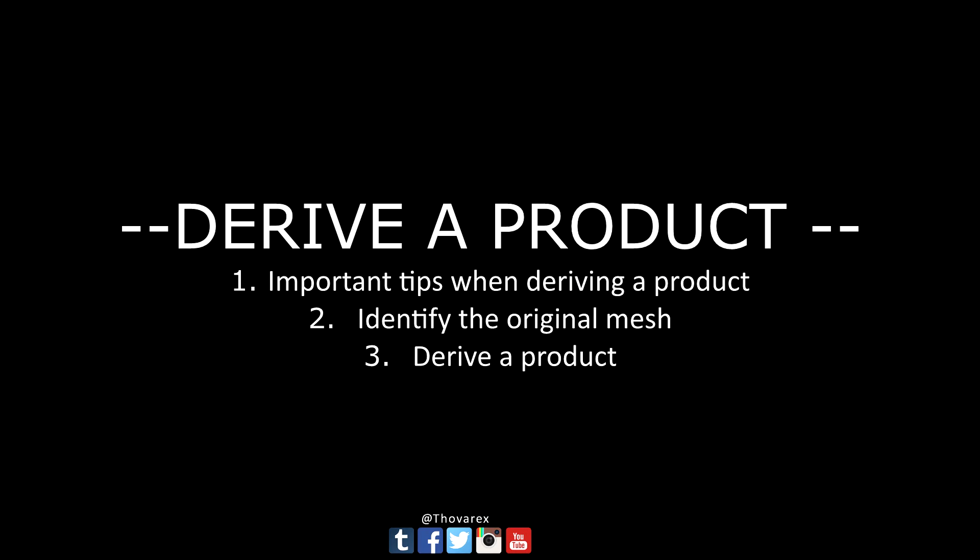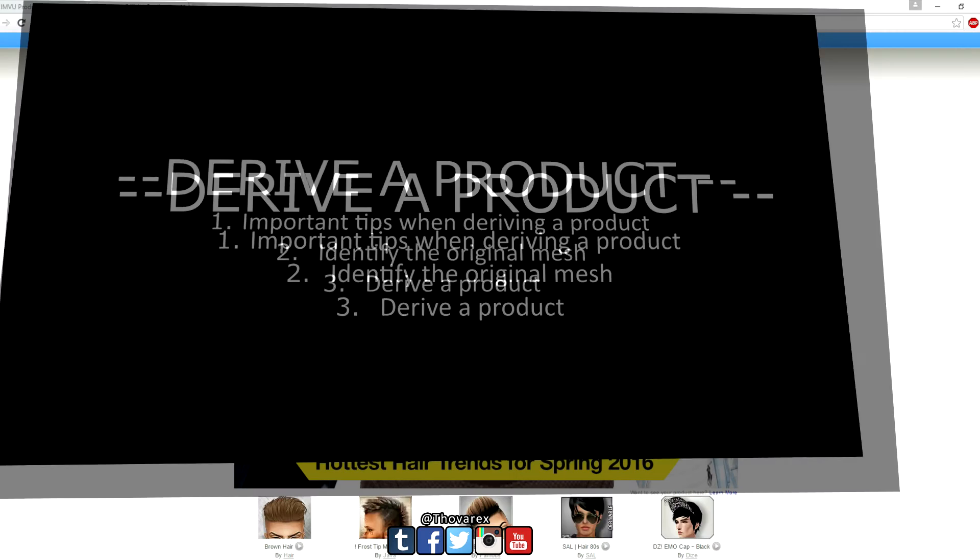Section 2: Identify the original mesh. I want to highlight this because sometimes I see people deriving from a product which has already been derived from the original mesh — that makes the price a bit high compared to the original mesh derivation price. I will show some examples of these kinds of derivation products and how to identify the original mesh creator, so you can see their other meshes too.